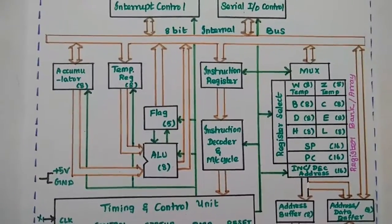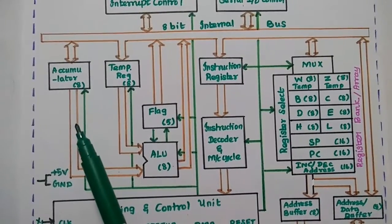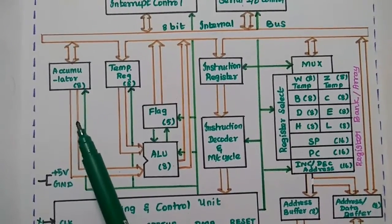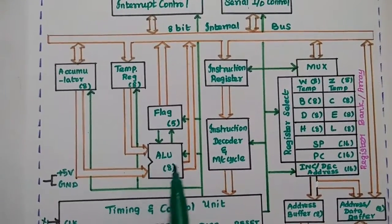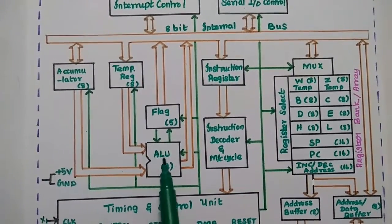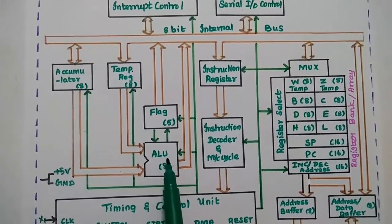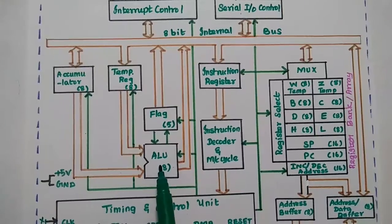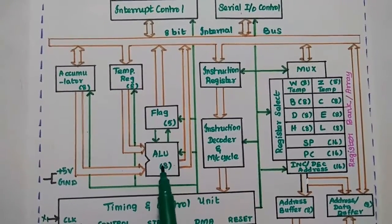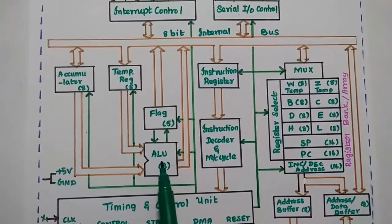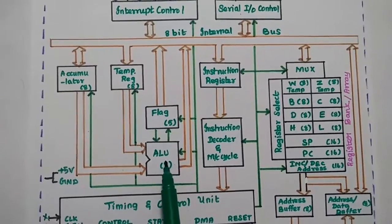Next is the accumulator, which is an 8-bit register used to hold data mainly for ALU operations. The ALU, or arithmetic logic unit, performs arithmetic operations such as addition, subtraction, division, multiplication, increment, and decrement, as well as logical operations such as AND, OR, and NOT.